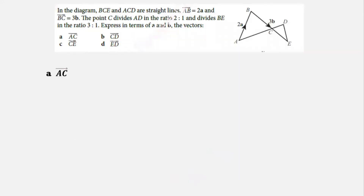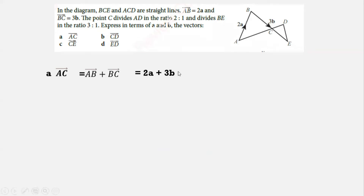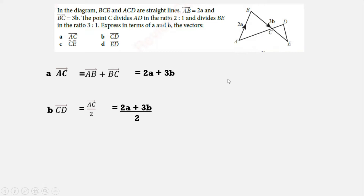Let's take a question from your book. BCE and ACD are straight lines. AB = 2a and BC = 3b. Point C divides AD in ratio 2:1 and divides BE in ratio 3:1. Find vector AC = AB + BC = 2a + 3b. Find vector CD. CD = AC/2, because C divides AD in ratio 2:1. So CD = (2a + 3b)/2.